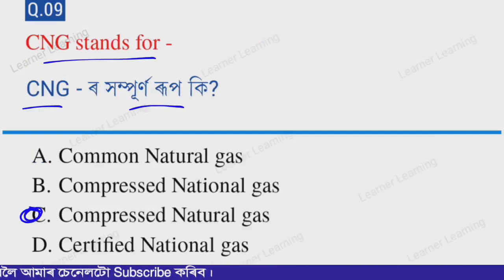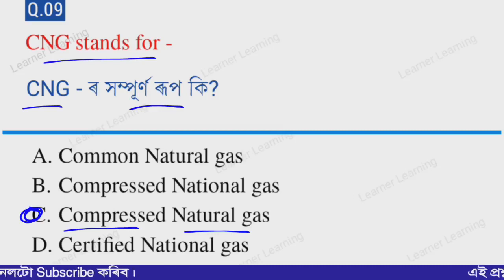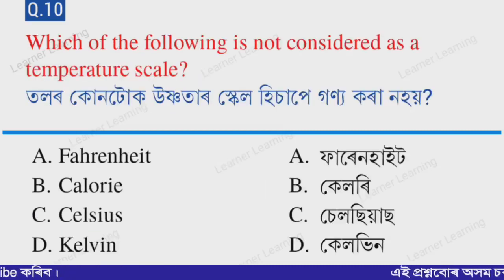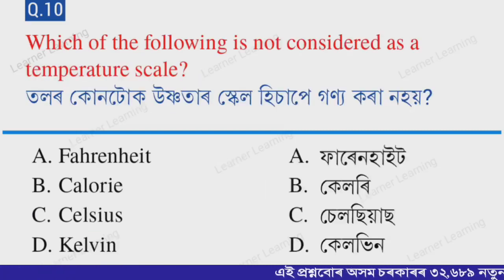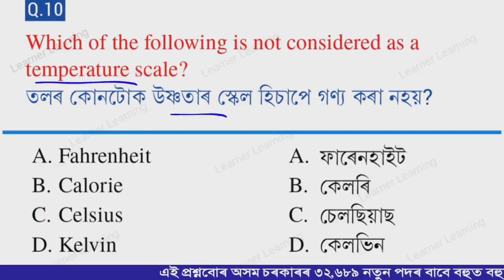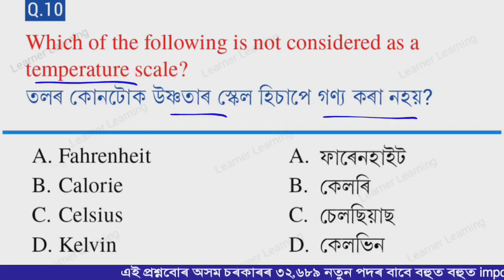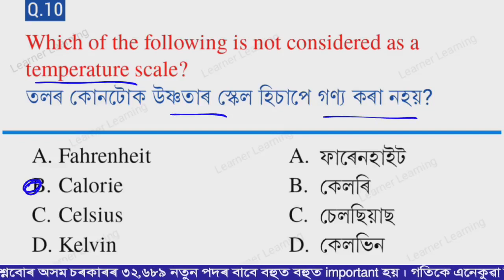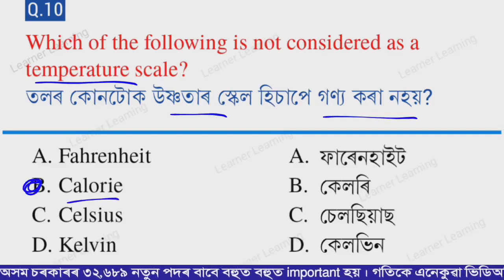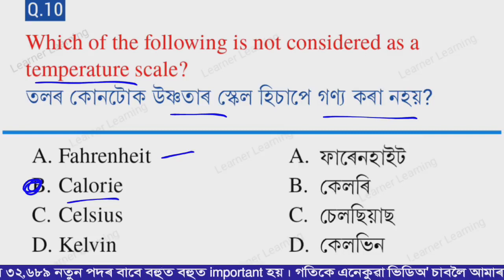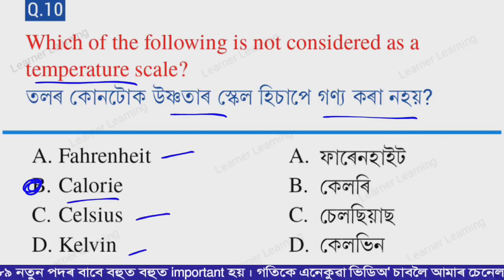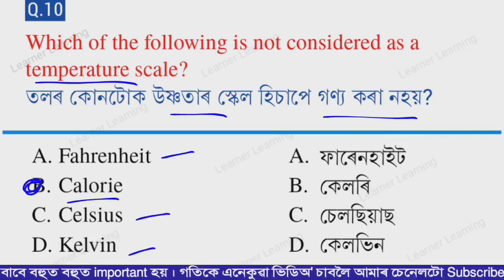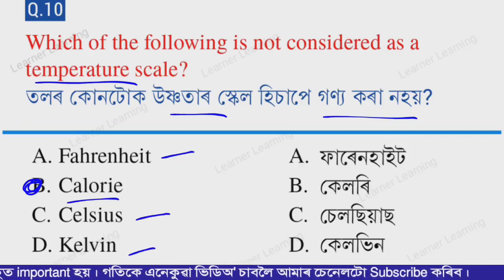Next question: Which of the following is not considered as a temperature scale? The correct option is option B — calorie. The remaining three — Fahrenheit, Celsius, and Kelvin — are temperature scales.